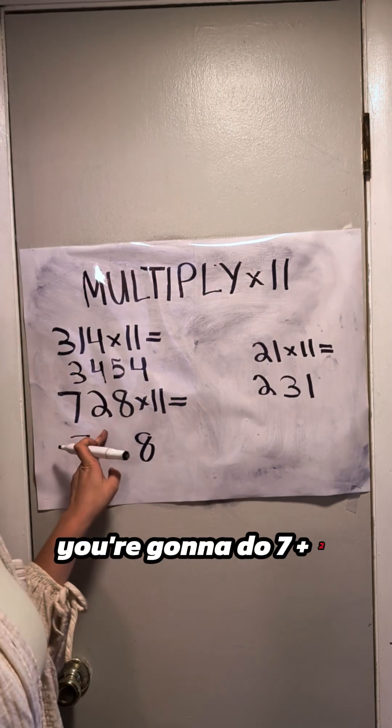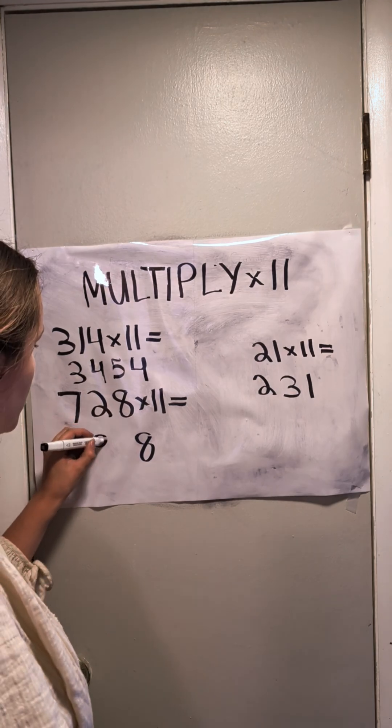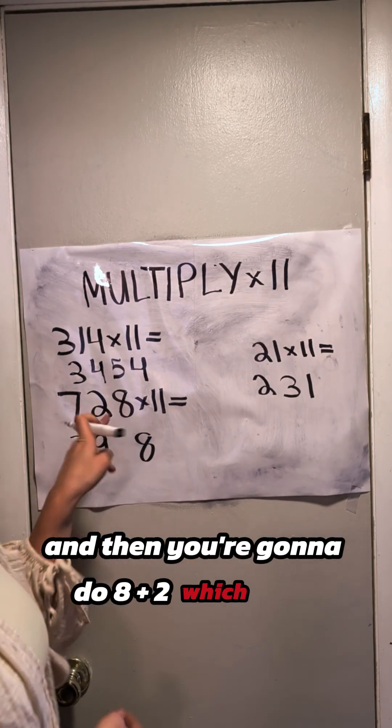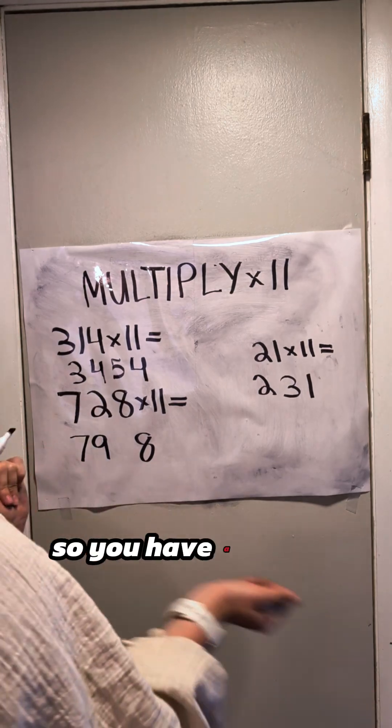You're going to do 7 plus 2, which is 9, and then you're going to do 8 plus 2, which is 10. So you have a double-digit number.